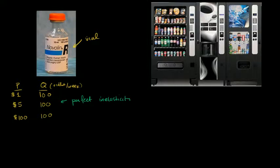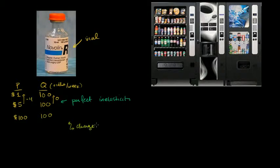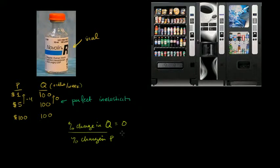And if you want to do the computation, you could figure out the demand elasticity for when you're going from a price of $5 to $1. The price went down by 4, and the quantity changed by 0. So your percent change in quantity is equal to 0. And your percent change in price, using the averaging method, would be going down by 4 over an average of 2.50 — a fairly large number, but 0 over anything is still going to be 0. So your elasticity of demand in this situation is 0.